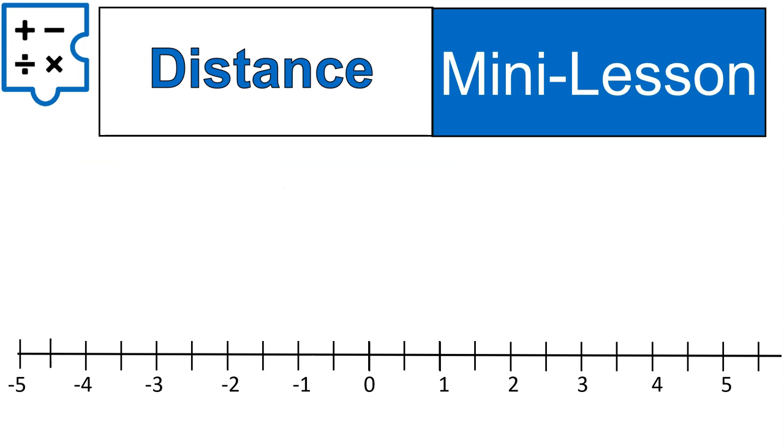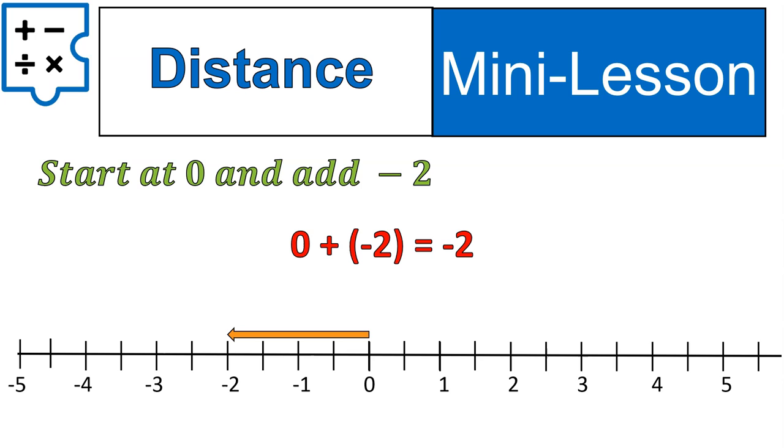Now let's talk about distance. This is the point of this lesson today. We are going to be looking at distance on a number line. So let's take a look at it. First off, if you were to start at zero and add negative two, it would look like this. I'm starting at zero and I'm going negative two places. The way I would write this out is zero plus negative two. And the final result is negative two. So I would say zero plus negative two equals negative two.